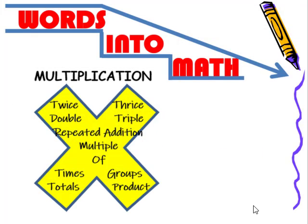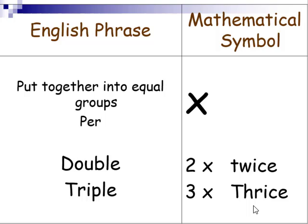Words that mean multiplication. One of the words that we see a lot of is the word of. Also, double, which means two times just like twice. Triple, three times just like thrice.